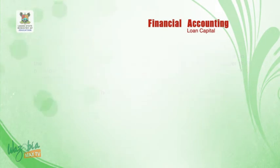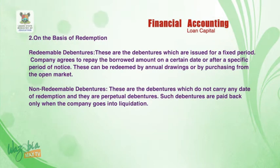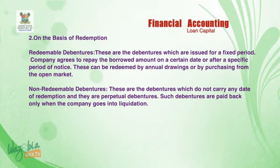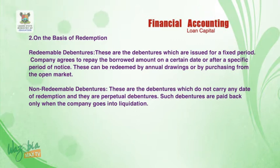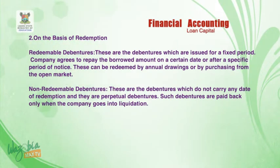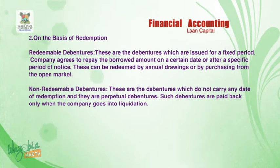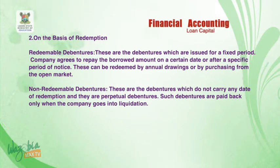Number two — on the basis of redemption — we have redeemable debentures and non-redeemable debentures. Redeemable debentures are issued for a fixed period; the company agrees to repay the borrowed amount on a certain date or after a specific period of notice. These can be redeemed by annual drawings or by purchasing from the open market. Non-redeemable debentures do not carry any date of redemption; they are perpetual debentures and are paid back only when the company goes into liquidation.